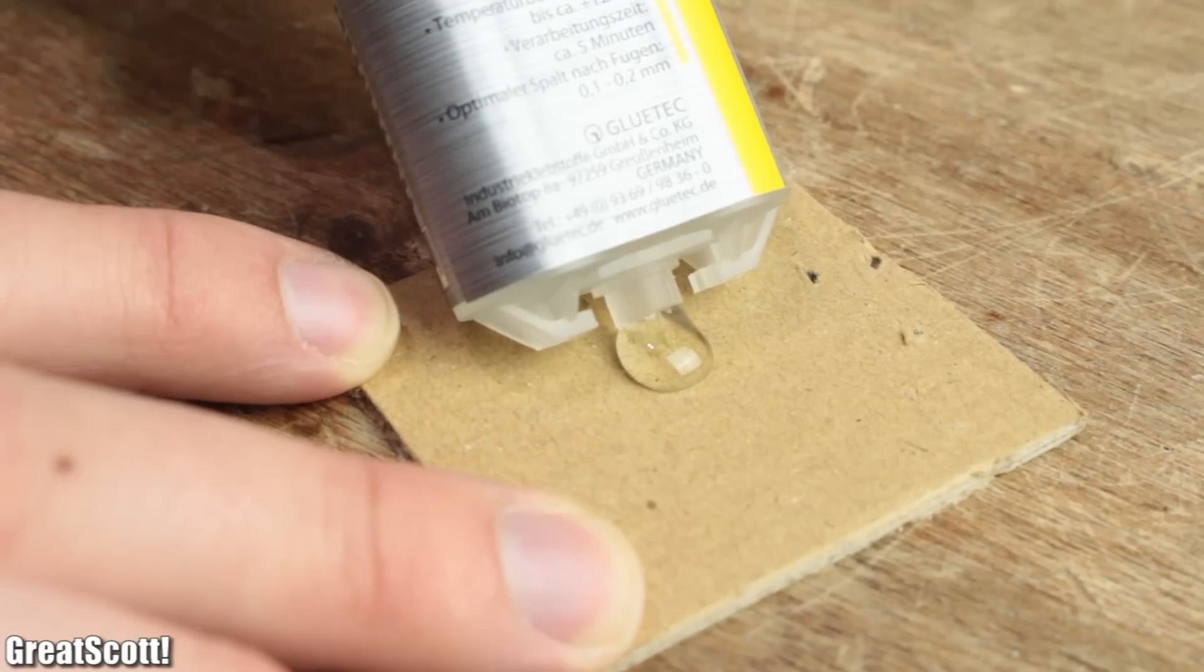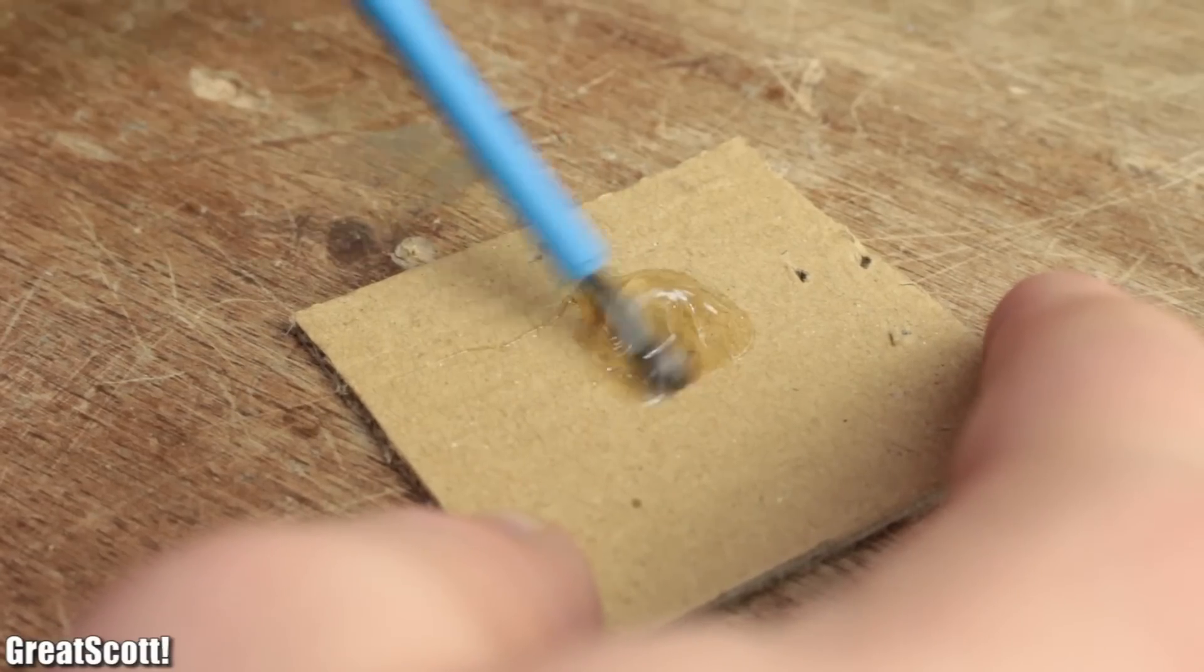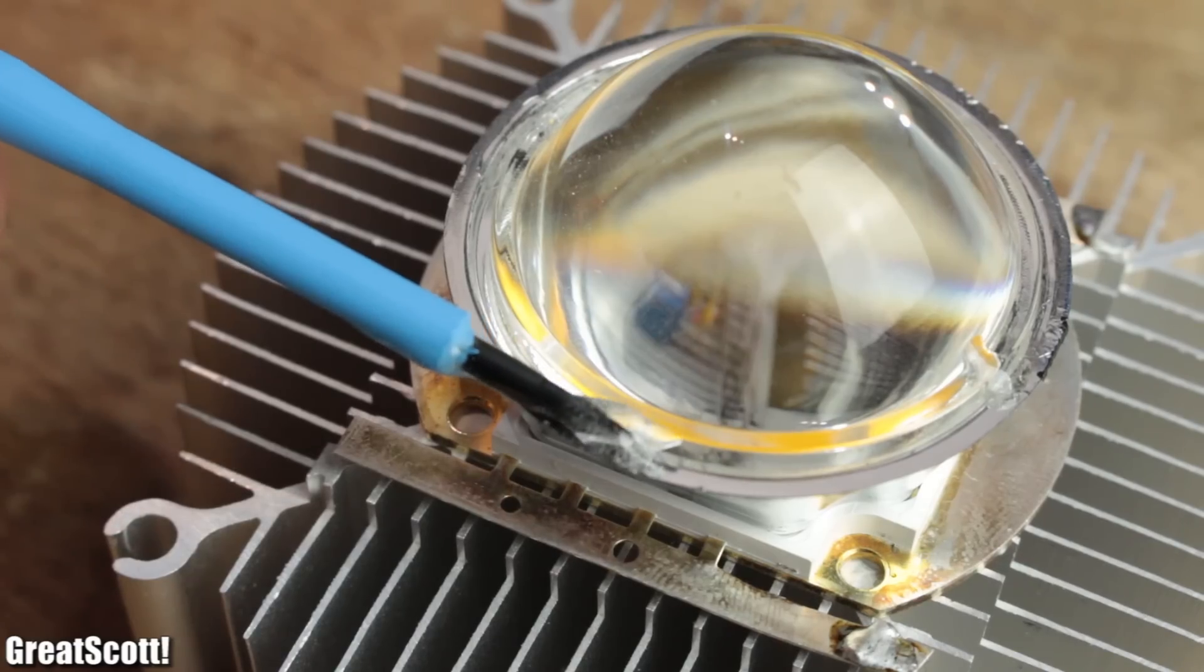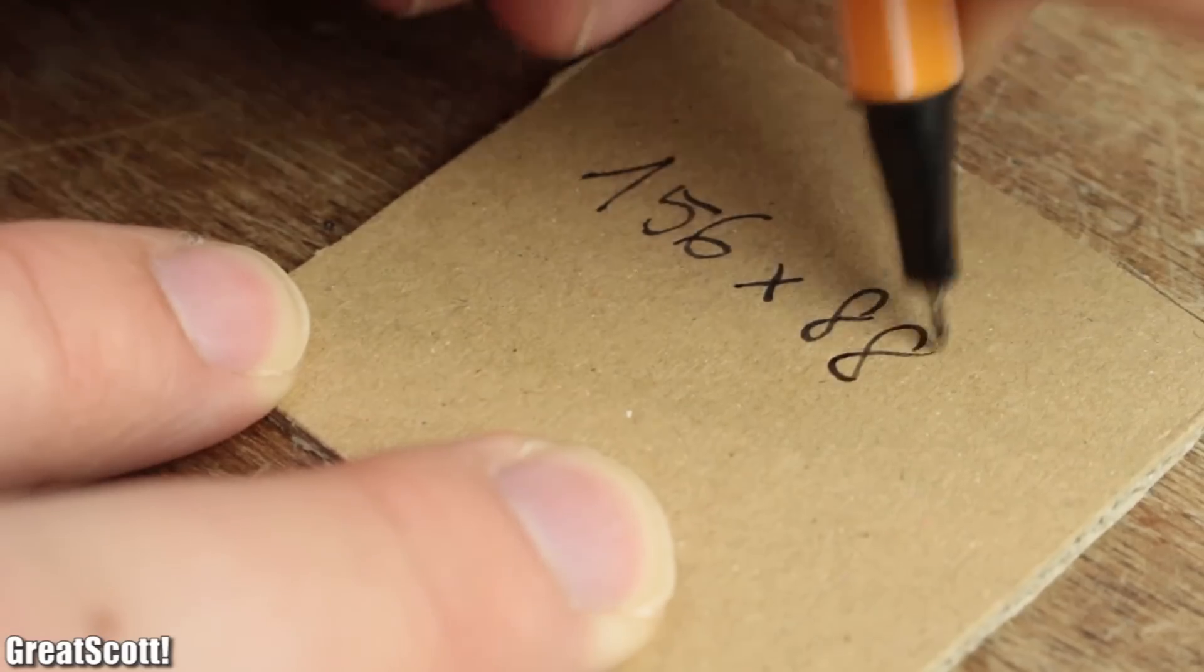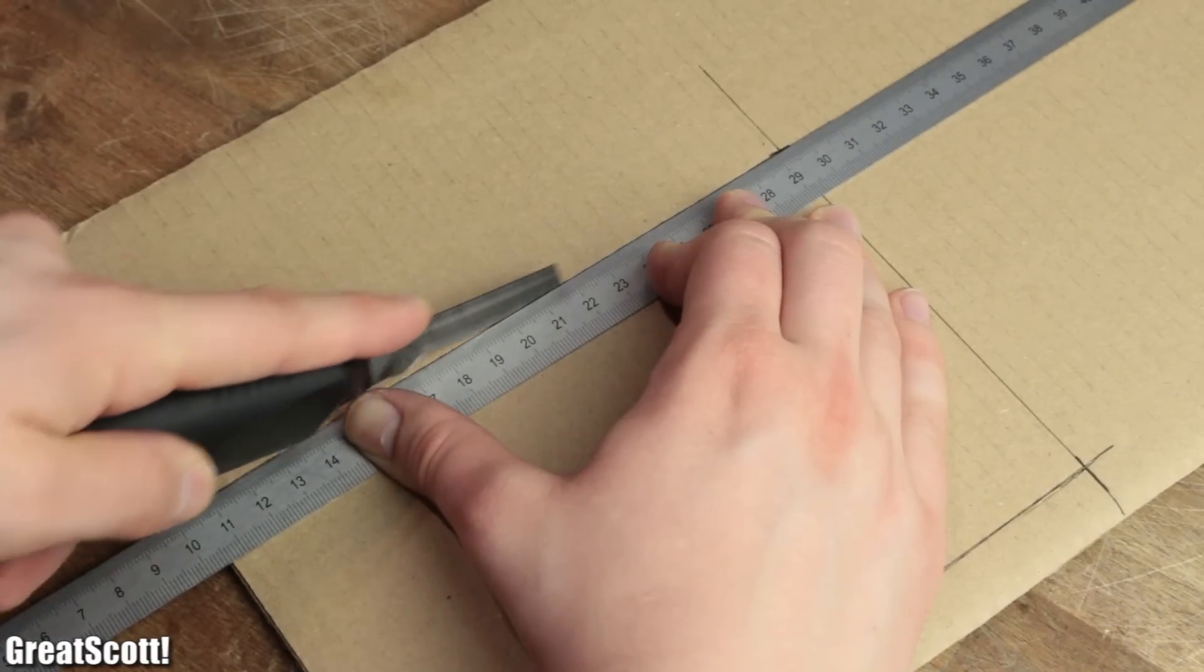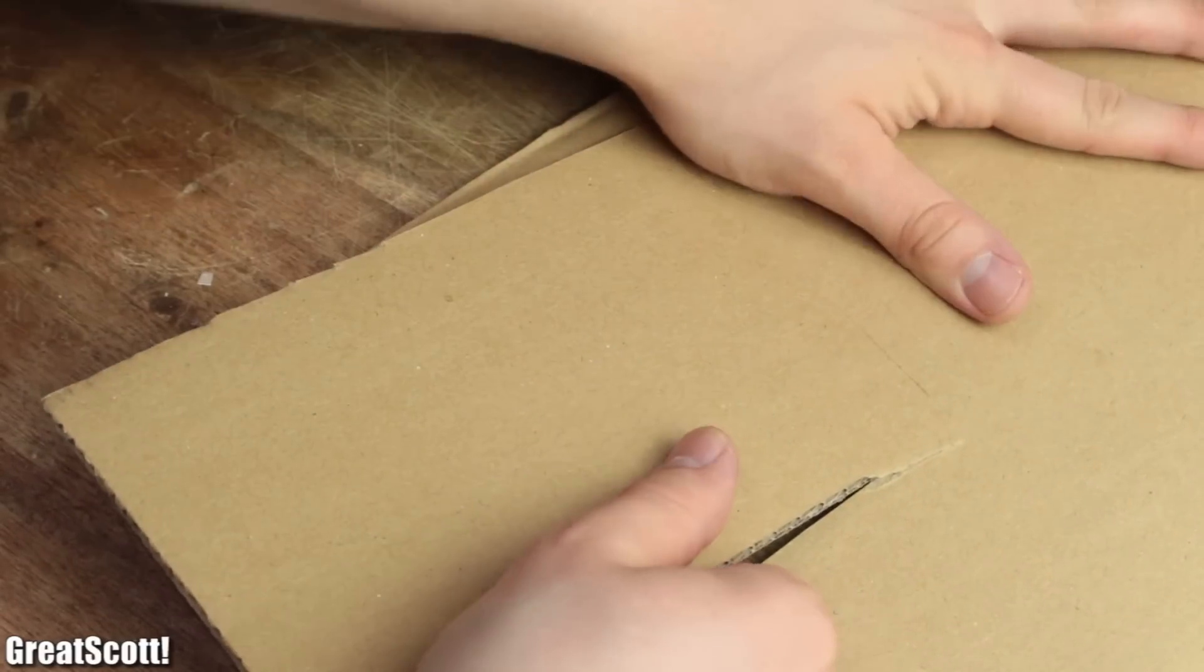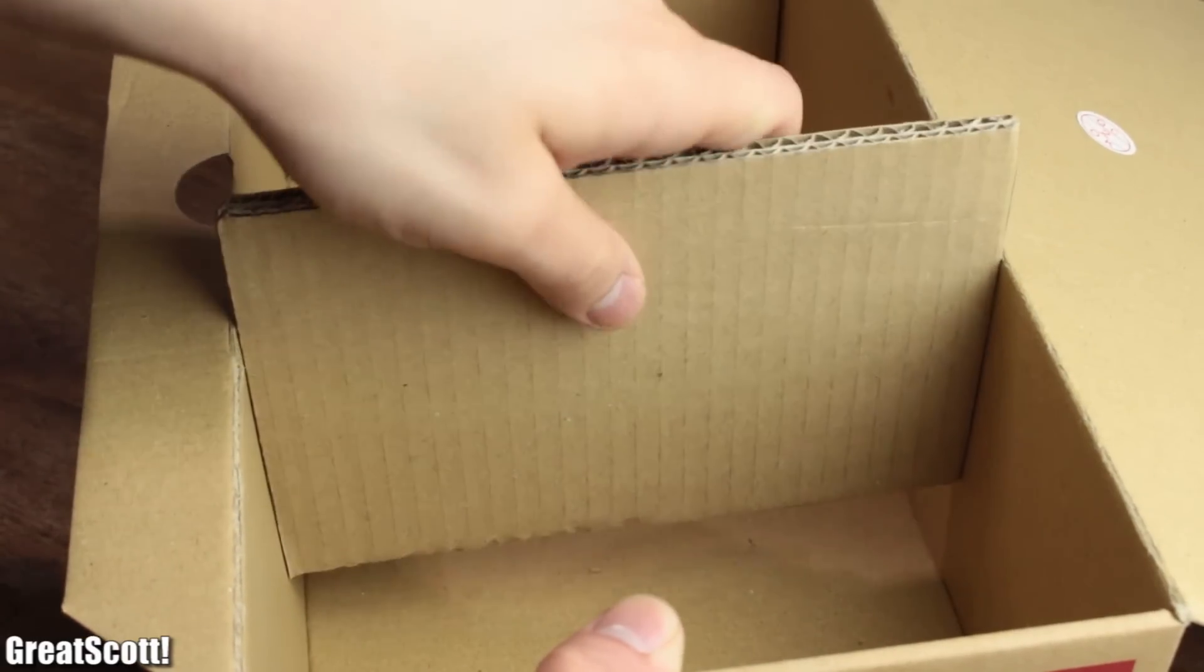Next I prepared a mixture of two component adhesive and used it to bond the base and lens to the LED. While that was drying, I drew a rectangle with these measurements onto a piece of cardboard and used a box cutter afterwards to create the shape which should fit well inside the shoebox.